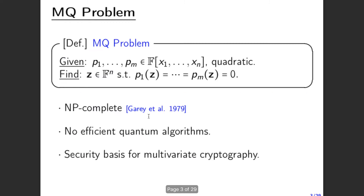Multivariate cryptography uses a set of multivariate quadratic polynomials as its public key. To break the whole cryptosystem, we need to solve that polynomial system. Solving a multivariate quadratic polynomial system over a finite field is called the MQ problem, short for multivariate quadratic problem. It is proven to be NP-complete, and there is no efficient quantum algorithm proposed yet, making it the security basis for multivariate cryptography.